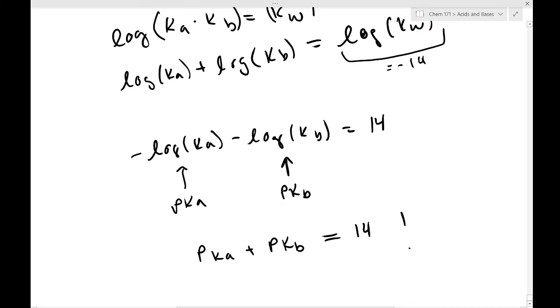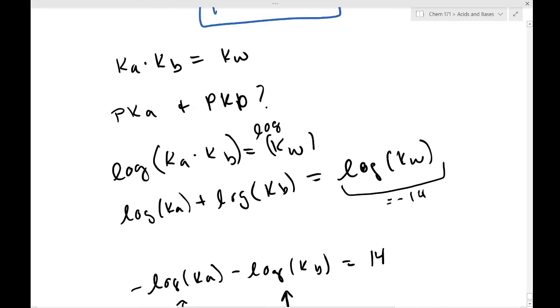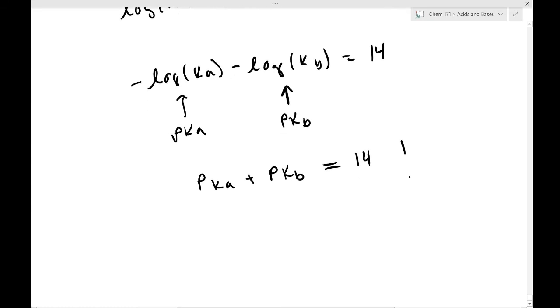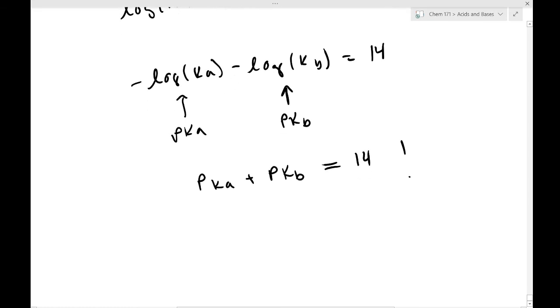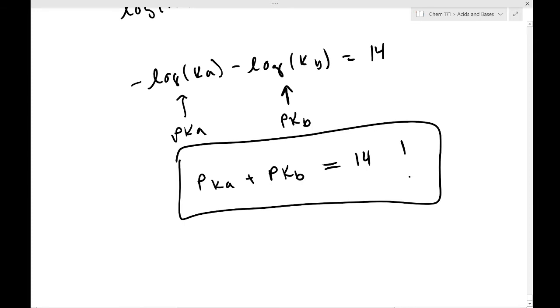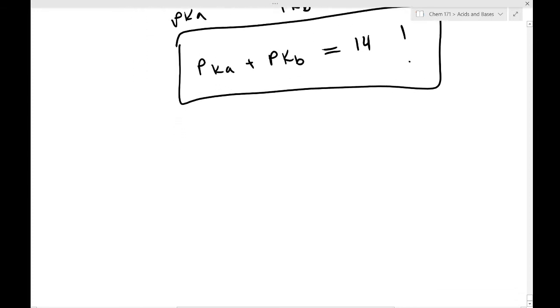So that means that pKa plus pKb is equal to 14. Wow, that's pretty cool. Okay, so and this, what we're talking about here, just like we're talking about the Ka and Kb of conjugate acid base pair, right? For example, acetic acid and acetate. If you look at the pKa and the pKb of a conjugate acid base pair, they will sum to 14. Interesting, right? So that's another little relationship that we can remember and use when it is convenient.